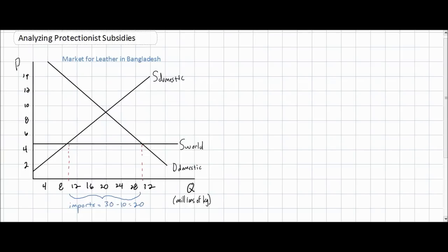Bangladesh imports leather, but Bangladesh also produces leather domestically. Why would a country that produces a good domestically prefer to import that good as well? Let's look at our supply and demand diagram to explain.